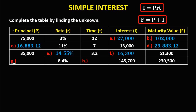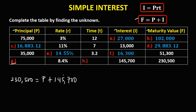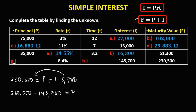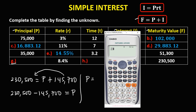For G, since principal is the unknown, using the maturity value formula: the maturity value is 230,500. To solve for P, we have 230,500 minus 145,700. Therefore the principal is 84,800.